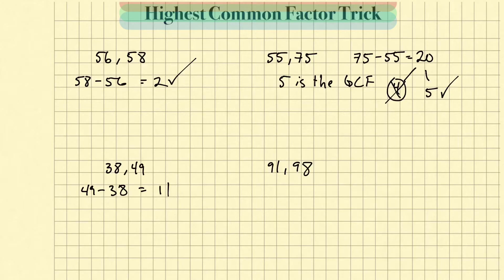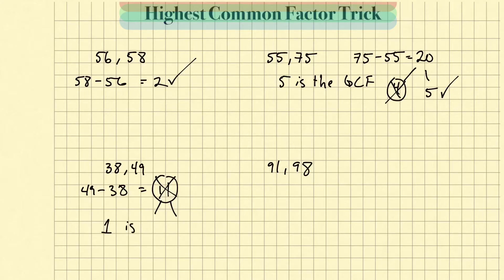Now, 11 is a prime number, so I can't factor it any further. Since 38 is not divisible by 11, I just need to find one number it doesn't divide into and cross it out. If I cross it out and nothing is left, that means the number 1 is the greatest common factor.